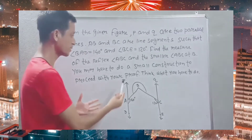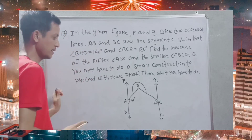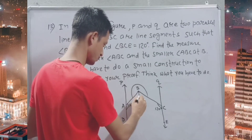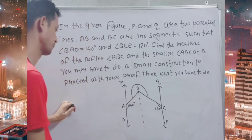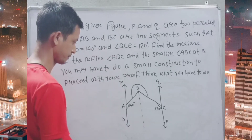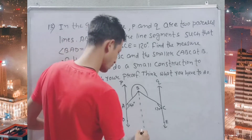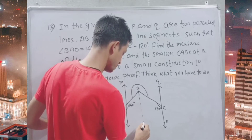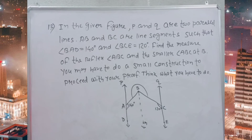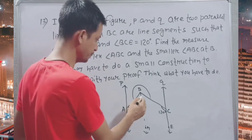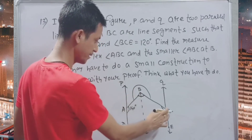We have to do one small construction to proceed with the proof. Drop one line here through B, parallel to P and Q. Put N. So we divide this angle B into two parts: angle ABN and angle CBN.